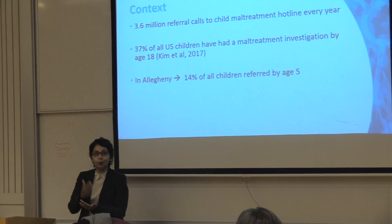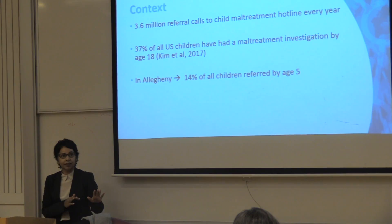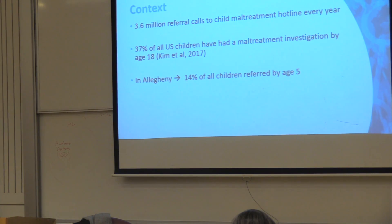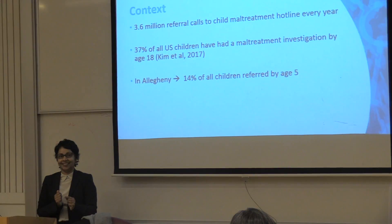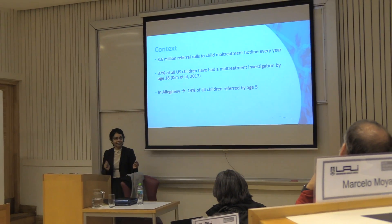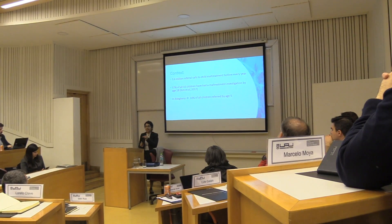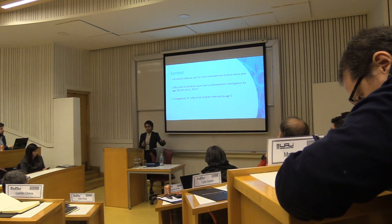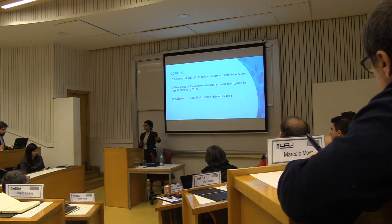Every call is a potential child being physically tortured or sexually abused, but they don't have the resources to go out on every call. Fifty percent of calls that come into the child hotline in the U.S. are screened out — they say there's no issue and leave it. Fifty percent they drive out and investigate. The amazing statistic from the U.S. is that one in three children before they turn 18 has been investigated for child abuse. There are communities — often poor families and African American families — where everyone has been investigated.